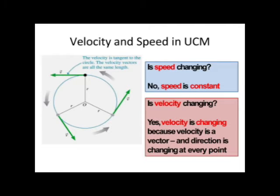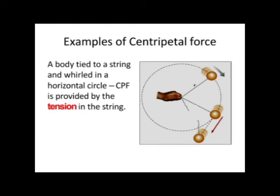From this diagram, you can see that the particle moves on the circular path with constant speed, but at three different positions it has different directions of velocity. So due to change in the direction of velocity, acceleration is produced, which is directed towards the center. Hence centripetal force is also directed towards the center.